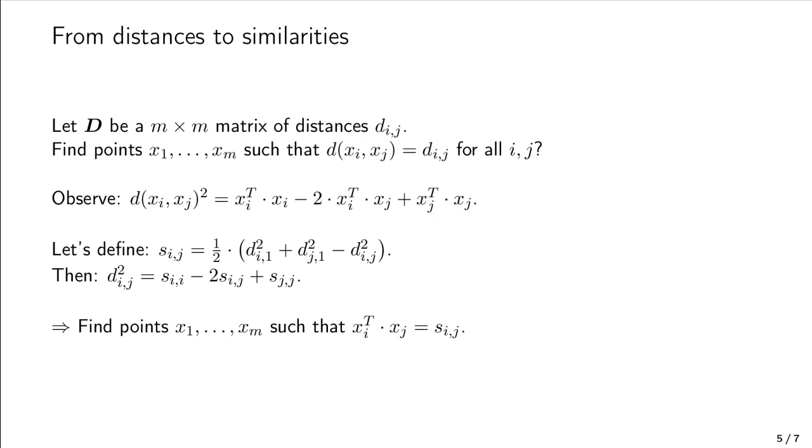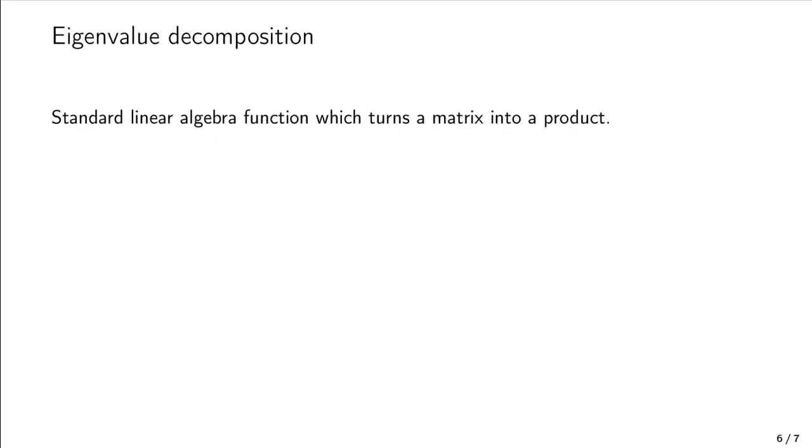So, how do we do that? Here, we turn to a bit of magic called the eigenvalue decomposition. The eigenvalue decomposition is super important in linear algebra and has many fascinating properties. But for our purposes here, we only care about two things. First, the eigenvalue decomposition is a standard function in many programming languages, so we don't have to program it ourselves. Second, it rewrites any symmetric and square matrix as a product, which is exactly what we need.